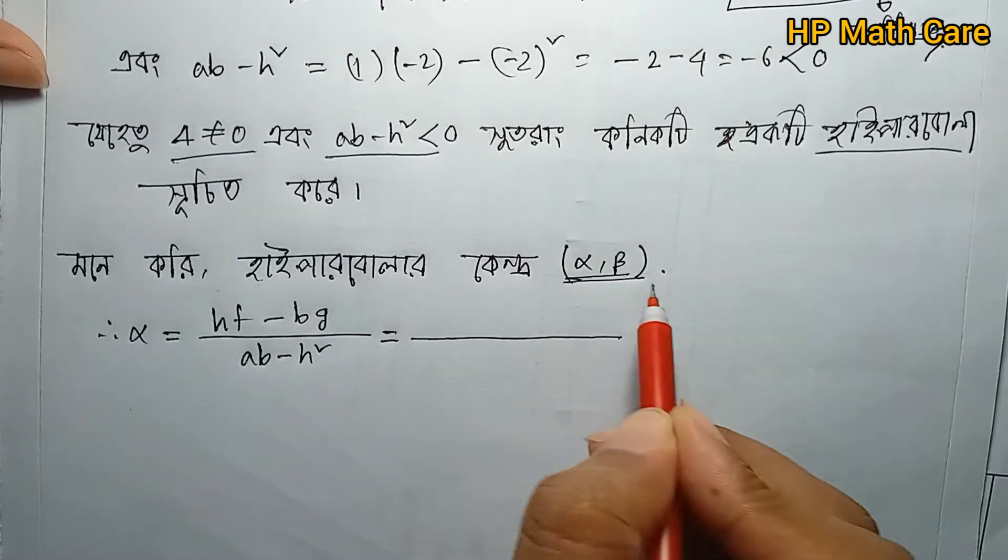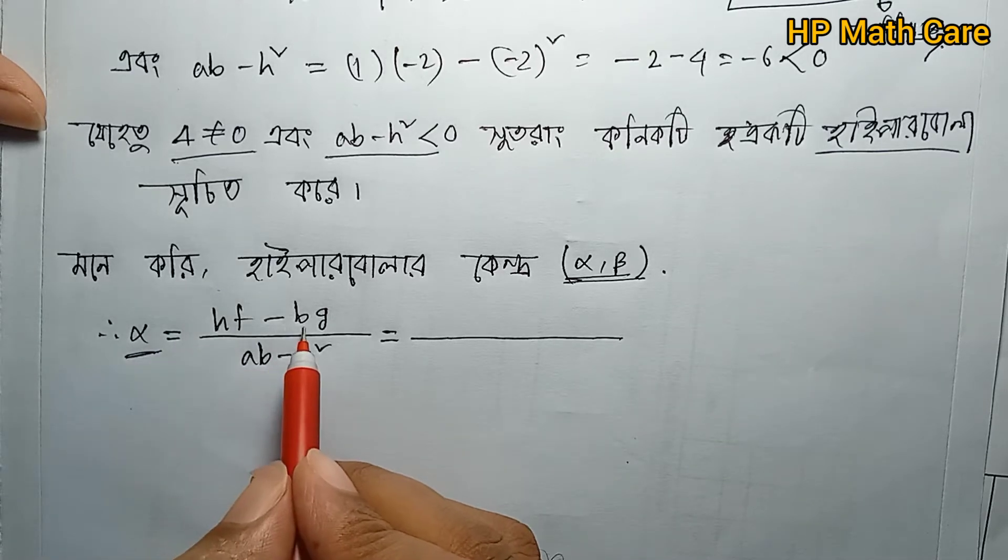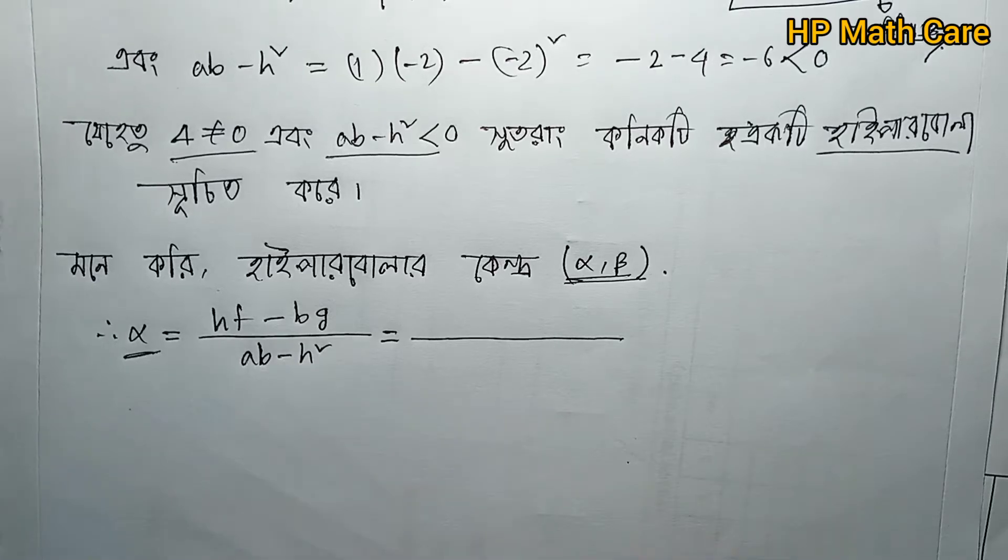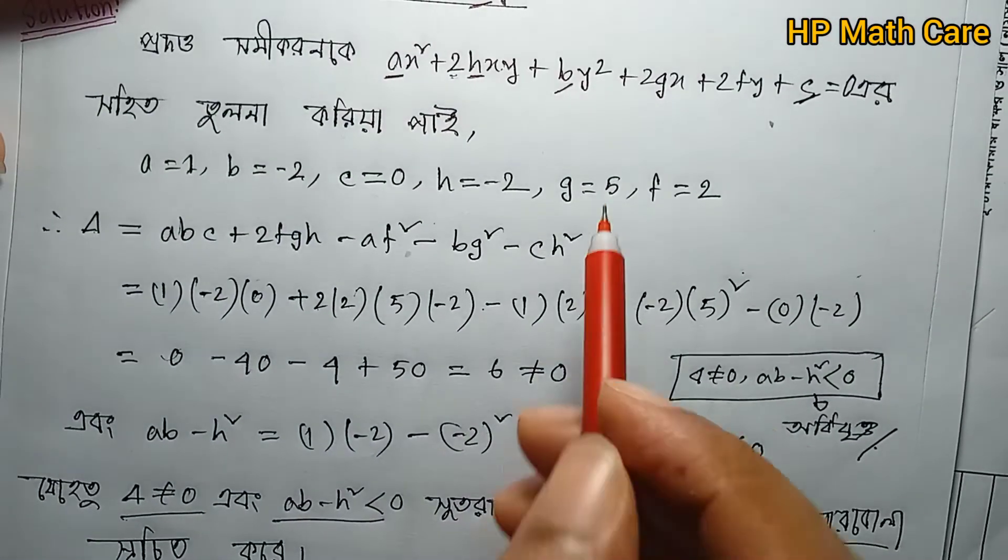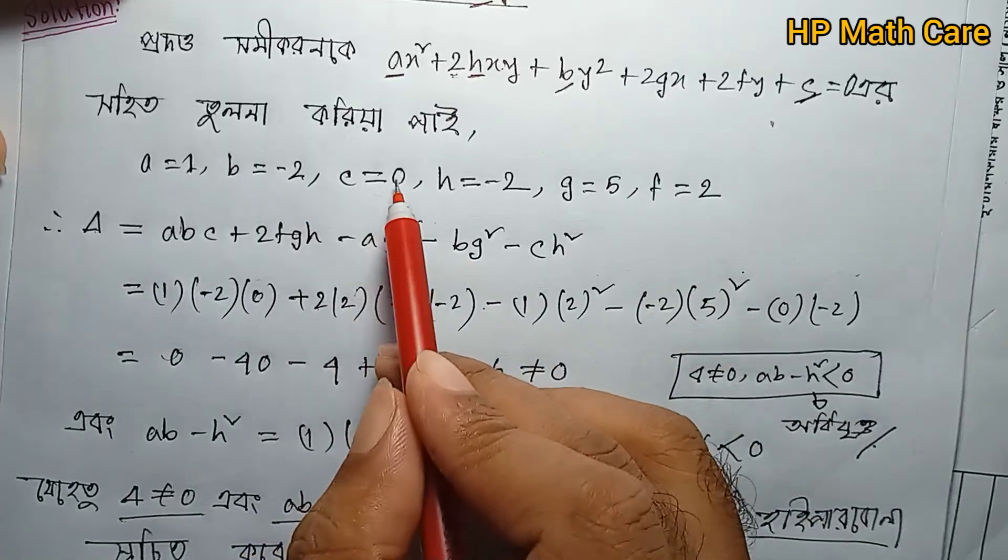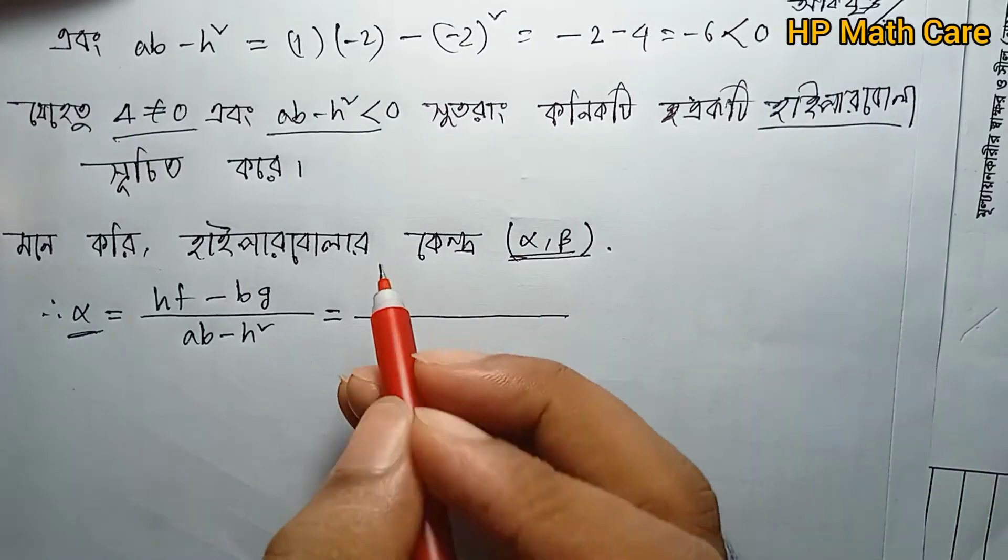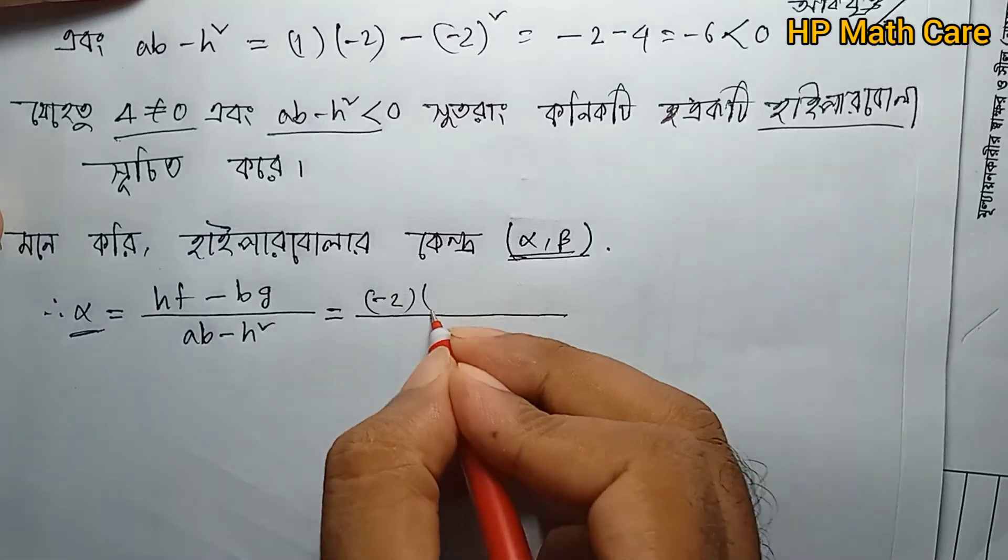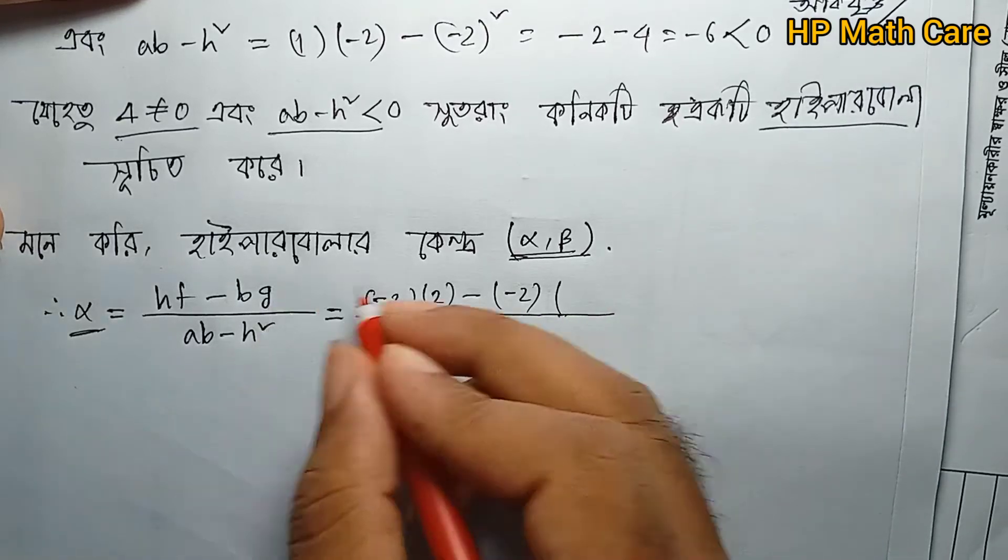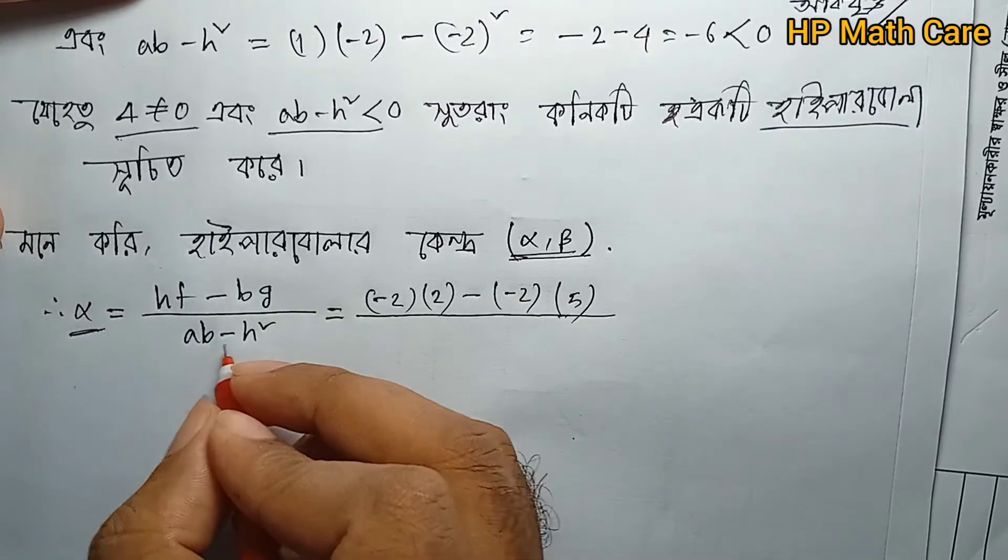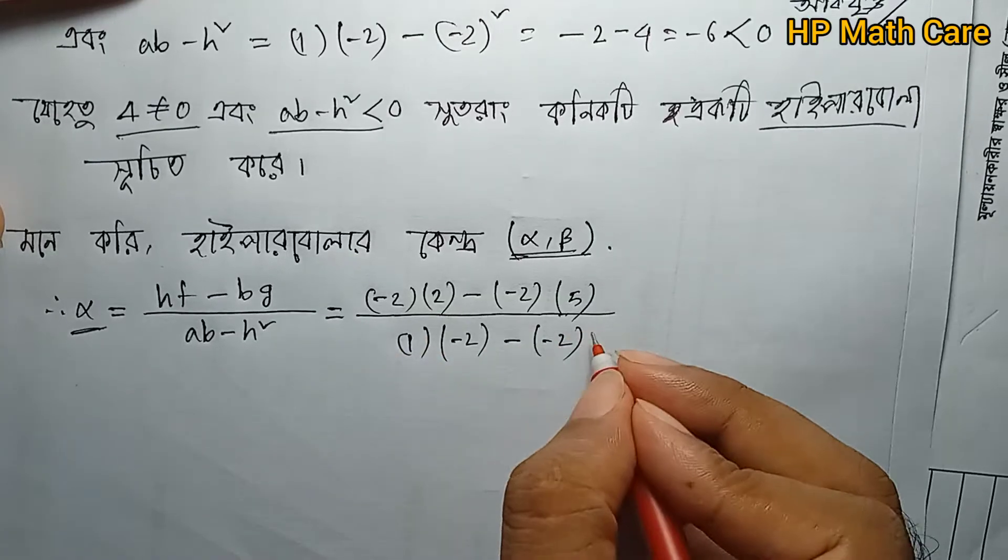The center formula: alpha = (hf - bg)/(ab - h²). Let me substitute: alpha = ((-2)(2) - (-2)(5))/((1)(-2) - (-2)²) = (-4 + 10)/(-2 - 4).